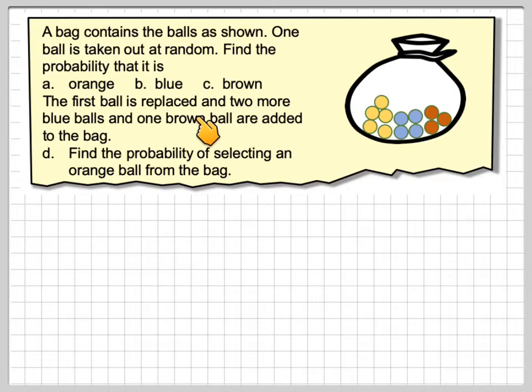The first ball is replaced and two more blue balls and one brown ball are added to the bag. Find the probability of selecting an orange ball from the bag.